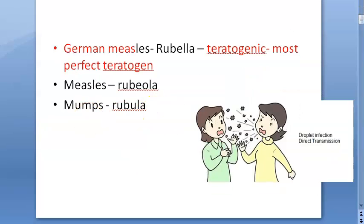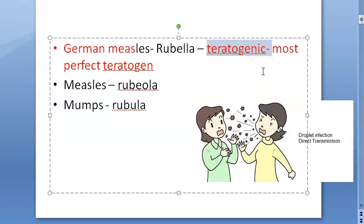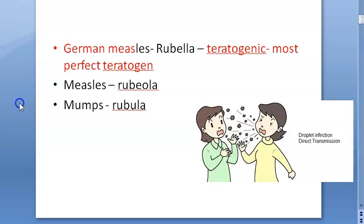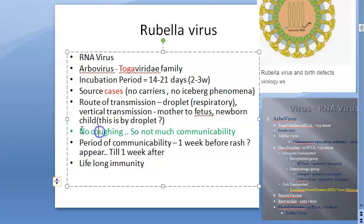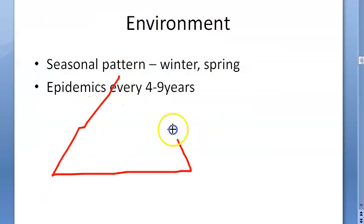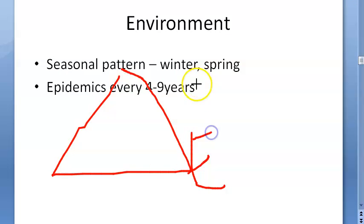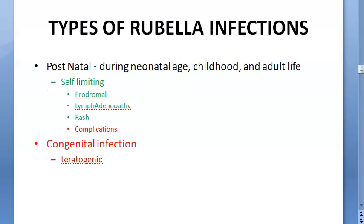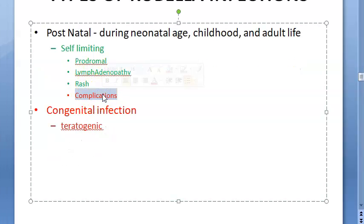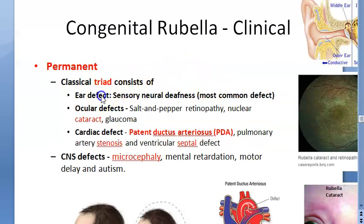The rubella virus inhibits cell division, which is why it causes congenital anomalies and intrauterine growth retardation. Notably, coughing is not a symptom, which limits communicability. Regarding the environment, there is a seasonal pattern of winter-spring, and epidemics can occur every five years. The stages of illness are prodromal phase, lymphadenopathy, and rash, with possible complications such as arthralgia.